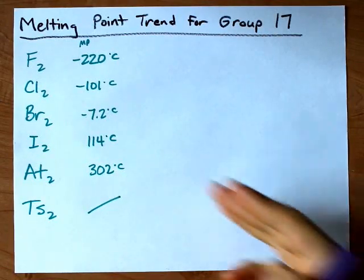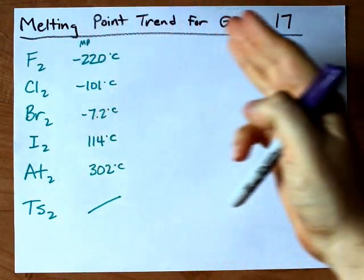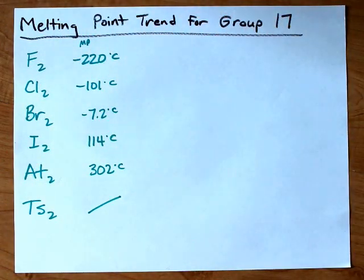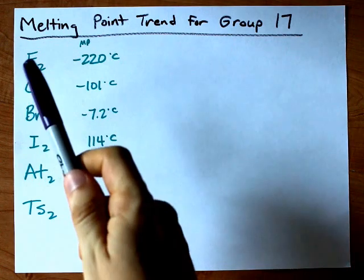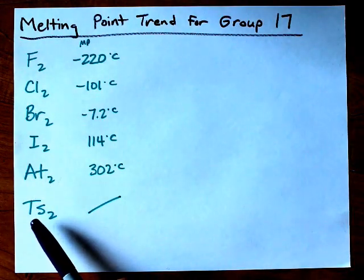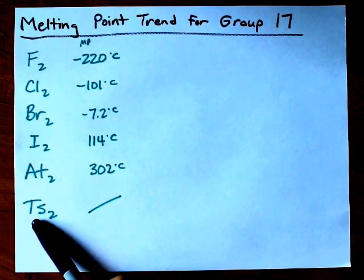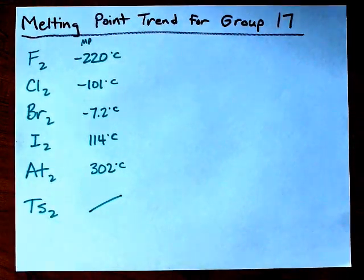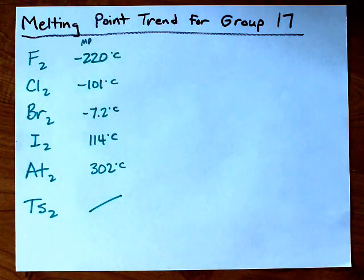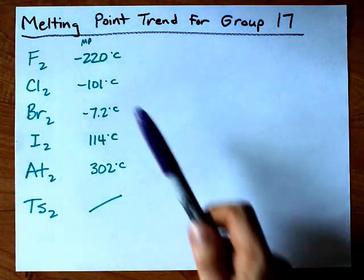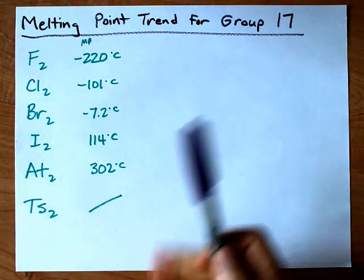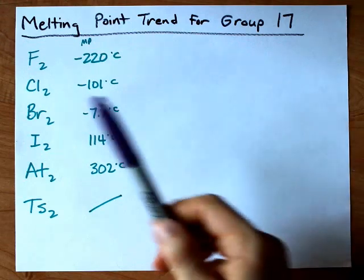What is the melting point trend for group 17, the halogens? I've listed the halogens here, including one that was discovered not too long ago and I've only seen on a few periodic tables so far. Don't worry about that — I just included it because I'm a nerd.